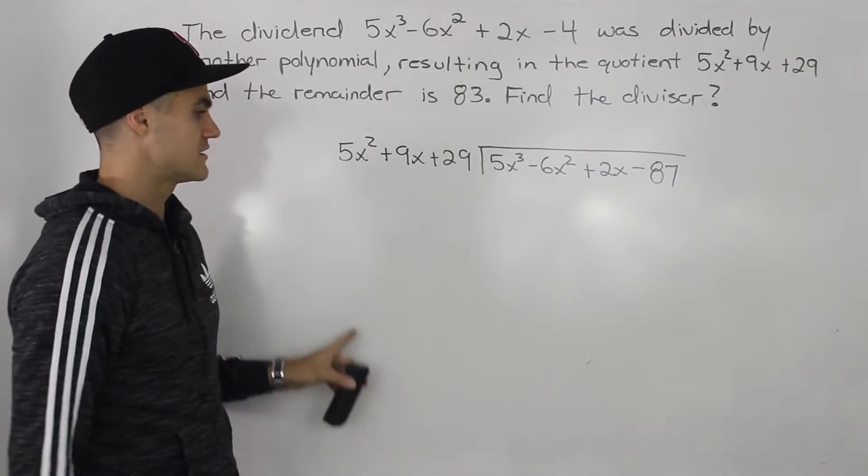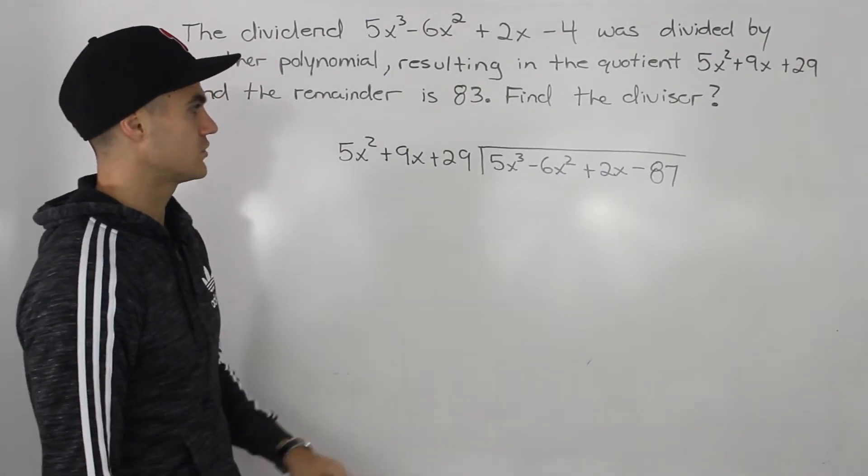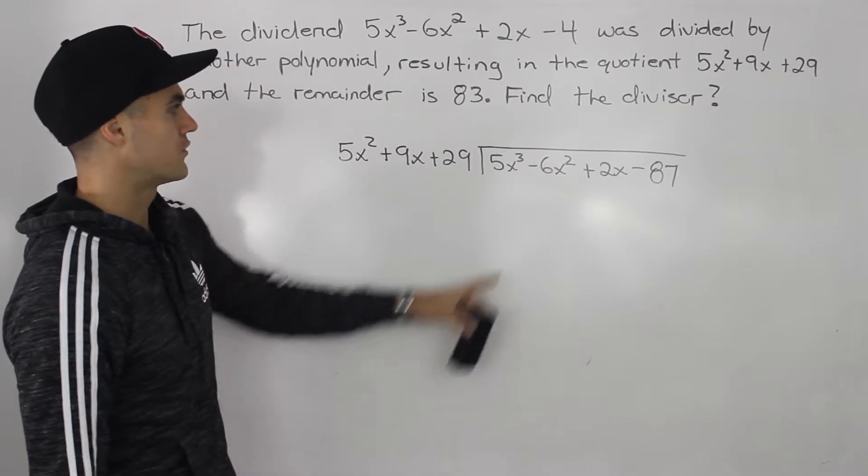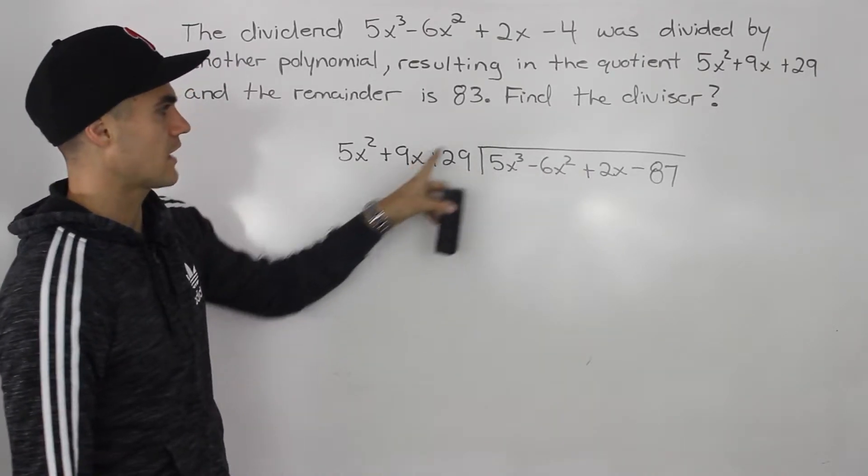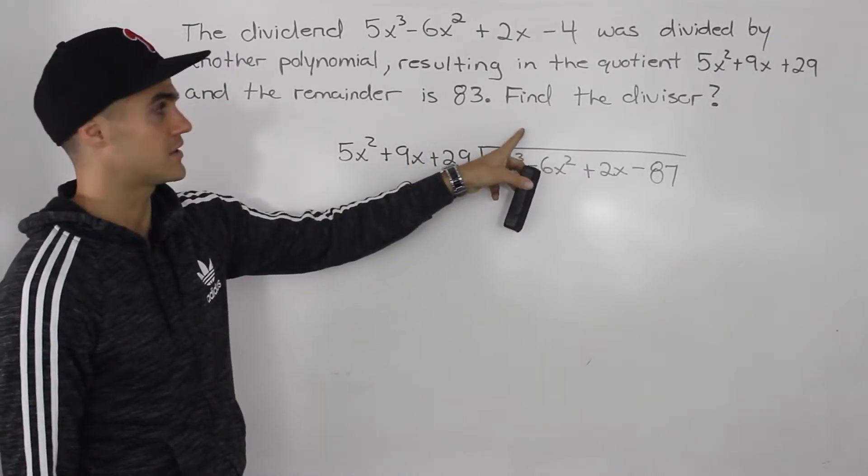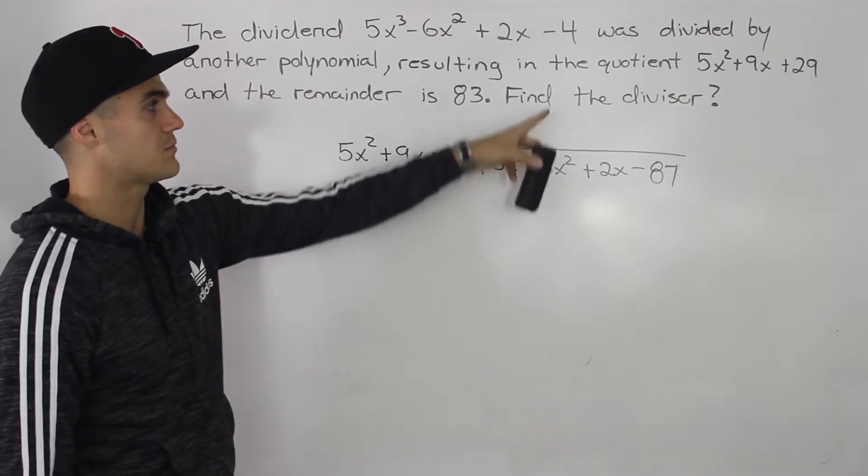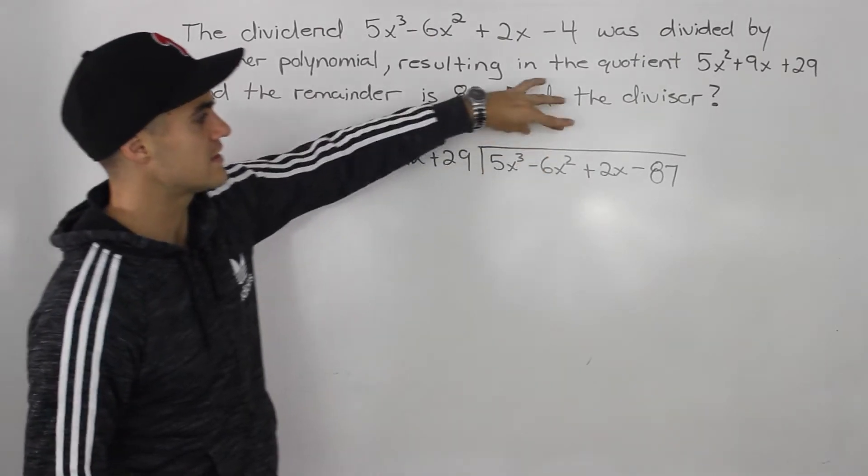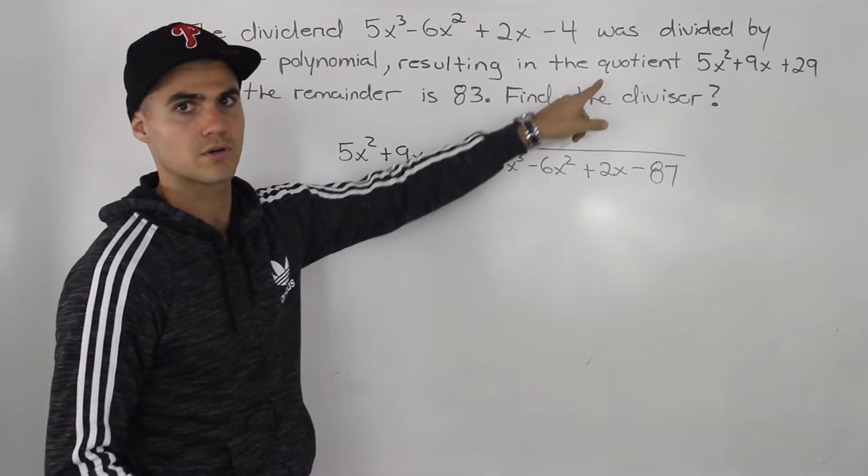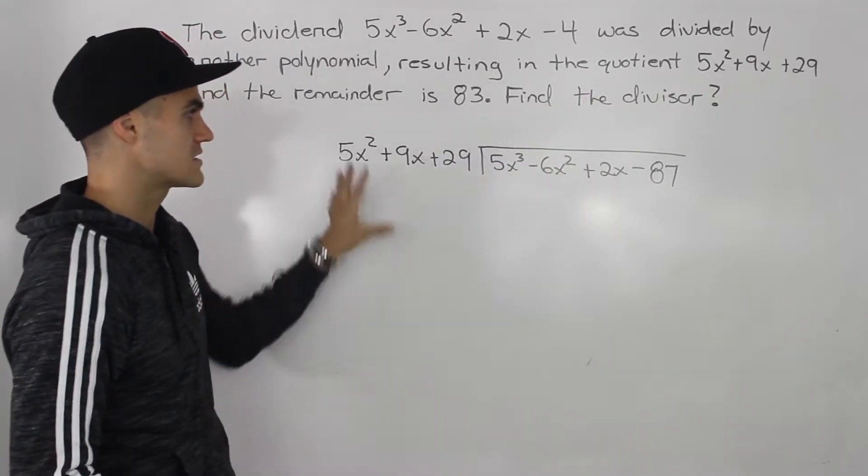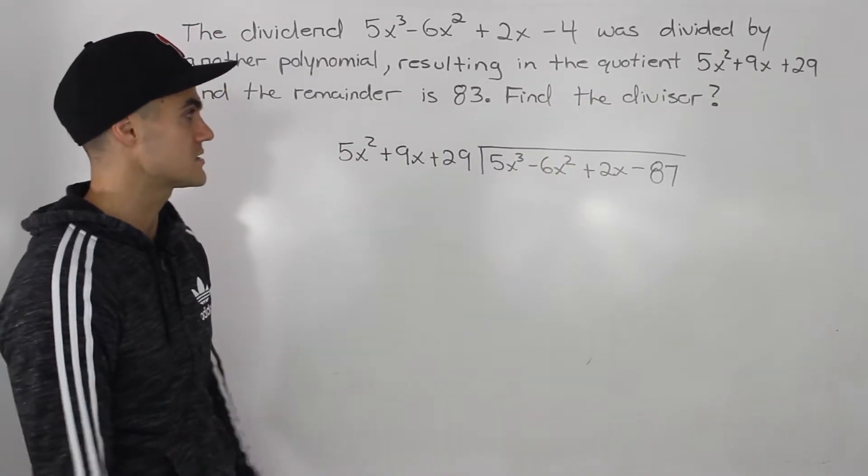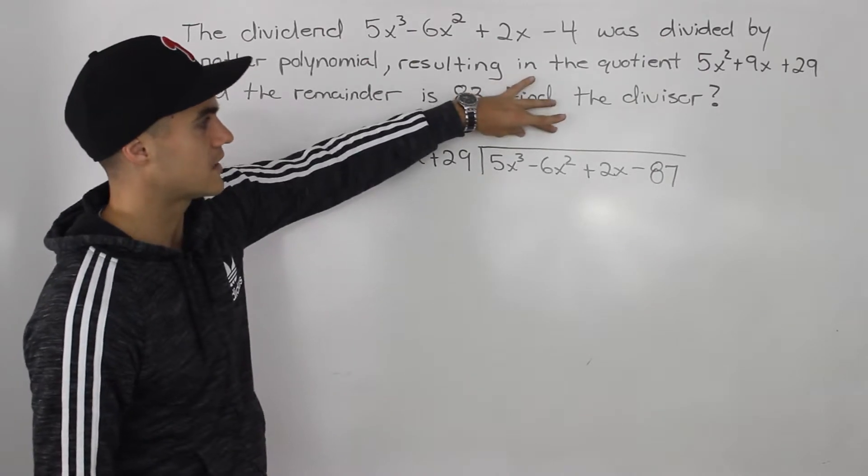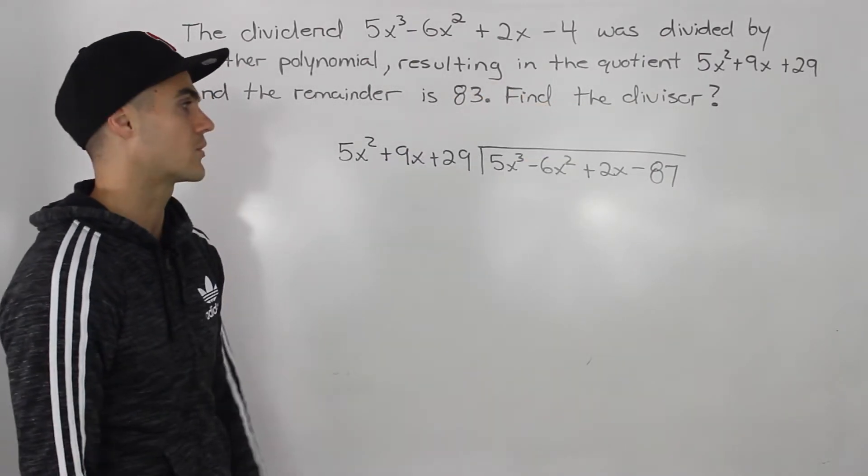So taking that division expression that we had, and then putting it into long division form, we're dividing this polynomial by this one. And then the quotient that we're going to get up here is going to end up being the divisor. Now the quotient in this long division is different than the quotient we are given. Just be aware of that. This is now just like a separate process. But what we get up here is going to be our divisor.